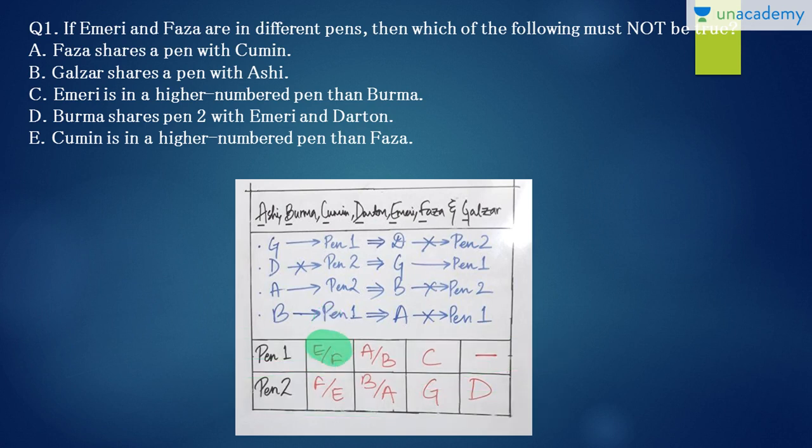So let us see if Emeri and Faza are in different pens. So Emeri, suppose Emeri is in pen 1, Faza will be in pen 2. And if Faza is in pen 1, Emeri will be in pen 2. Also there is a case, these two cases have to be filled in where A and B can't be together. So either A or B comes in pen 1 or pen 2. But we also know that G and D should come together. So after these two spots are taken by E or F or A and B and A and B, A or B, then just one spot remains. So G and D can't come there because they have to come together. So the only option left here is C and G and D takes this place.